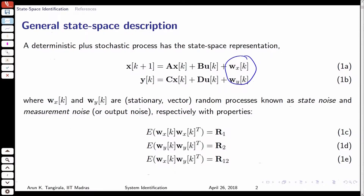The key difference between the deterministic and the stochastic version is the appearance of stochastic terms or signals in the state and measurement equation. As I pointed out yesterday, the description now consists of A, B, C, D and three noise covariance matrices R1, R2, R12. In many situations R12 may be 0, meaning the process and measurement noise may be uncorrelated.